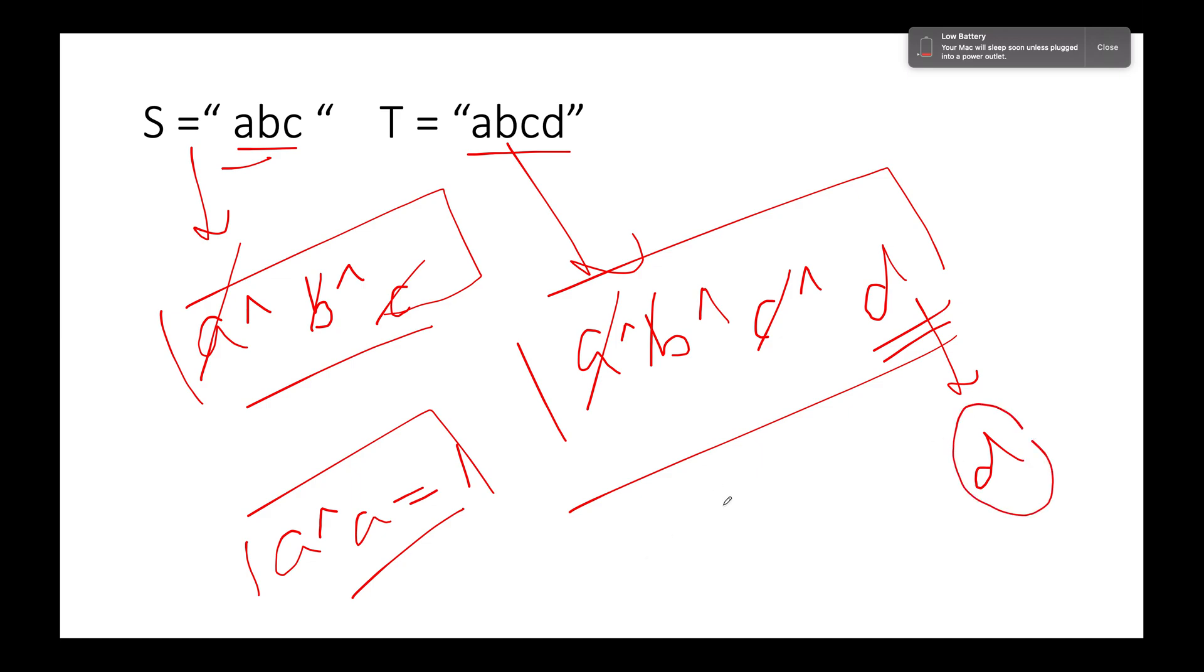Here we don't need to create any frequency map. It is much faster than the other approach. The time complexity is again equal to length of T. And the space complexity of this approach is constant space. We are not using anything extra.